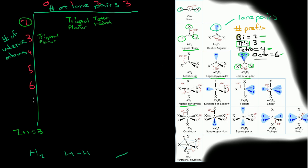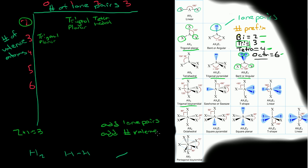What if we have 3 valence atoms and 0 lone pairs? Well, 3 plus 0 is 3, and tri equals 3, so we're going to have trigonal planar. All you have to do is add the number of lone pairs and add the number of valence atoms, then match the prefix.